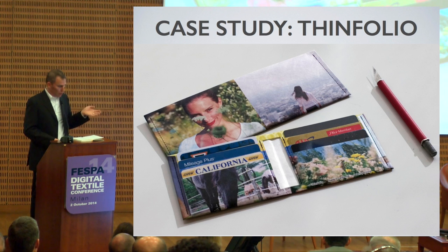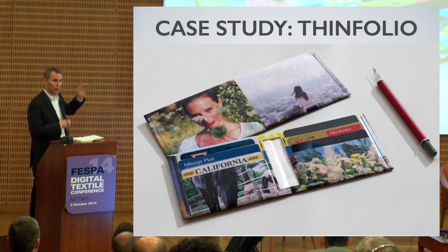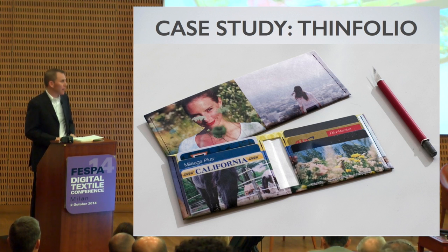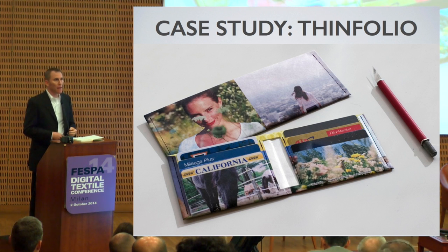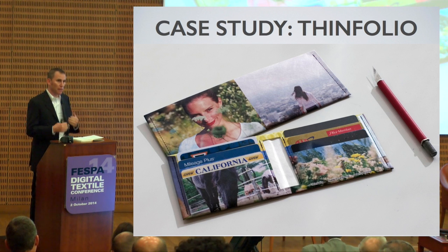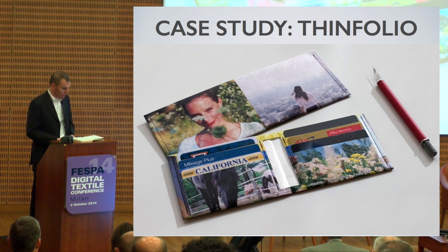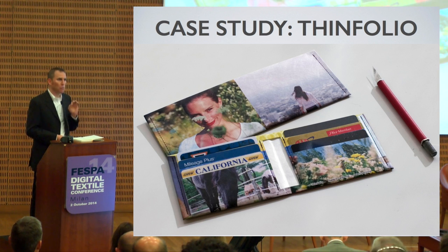Now let's look at our product, the Thinfolio wallet. It's actually a physical wallet — not a digital wallet. It's printed on Tyvek, which is a very thin, very strong synthetic paper. We print it in our studio in California, cut it, sew it, and ship them around the world. Everything is produced in-house, all within just a few meters, and everything is made to order — every single piece is made because of an order.